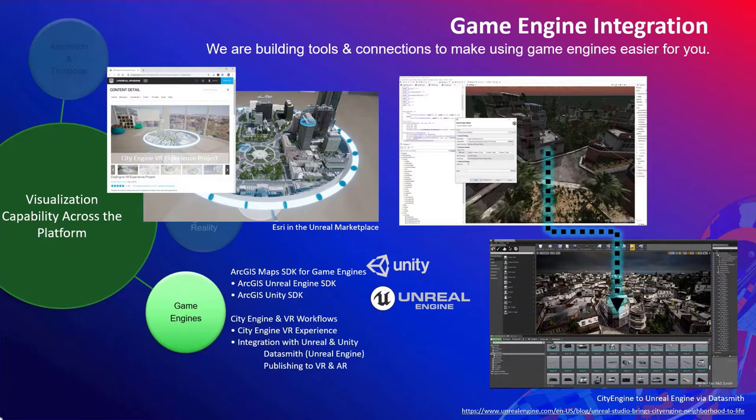We've been making a lot of progress integrating with game engines. Game engines are very powerful tools to visualize your data — they provide a lot of interactivity, especially for creating VR or AR experiences. We see this potential and the need, so we've been building bridges to help you take your data into game engines such as Unreal and Unity through the ArcGIS Maps SDK for game engines. City Engine also provides VR workflows where you can create tabletop experiences within AR, ultimately enabling you to show GIS data in headsets such as the Oculus.